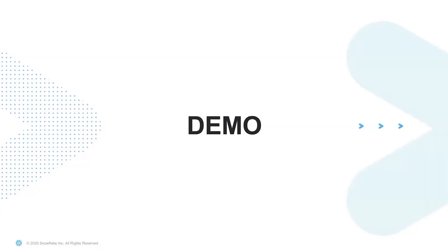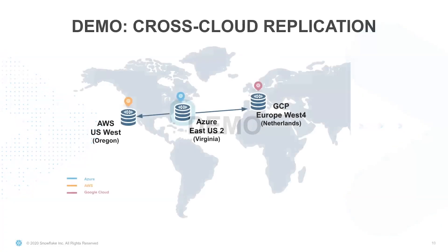Now let's take a look at Snowflake replication in action. Here's the setup: we're going to do a demo of cross-cloud replication. We have three accounts across AWS US West, Azure US East, and GCP Europe. We have a database in the Snowflake account in Azure East US, and our goal is to replicate that database to our Snowflake accounts in AWS US West and GCP Europe for business continuity.